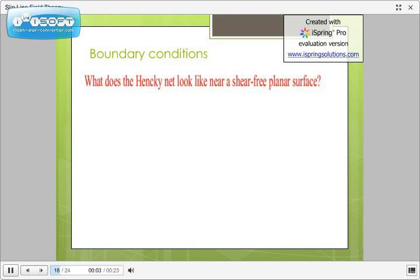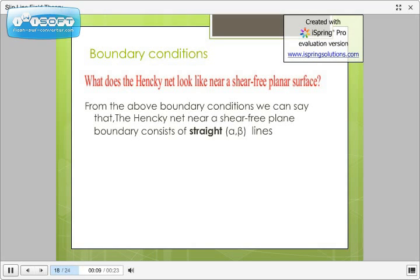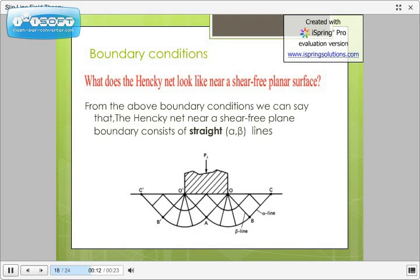Here, from above two boundary conditions, we can see how does Hencky net look like near a shear free plane surface. Hencky net is just a net of alpha beta lines. Here, in this diagram, OC is free surface. And here, Hencky net in this region, OC consists of straight alpha beta lines. As you can look from this diagram.